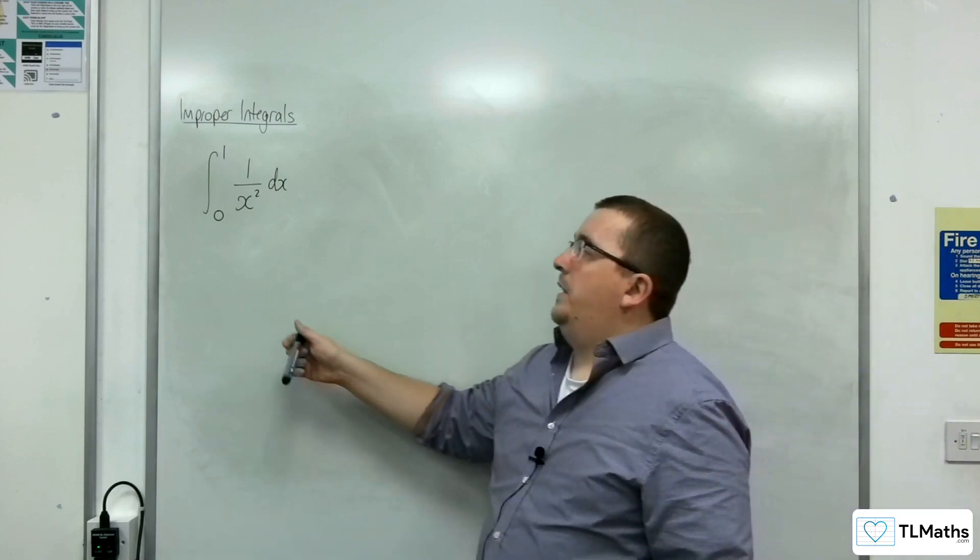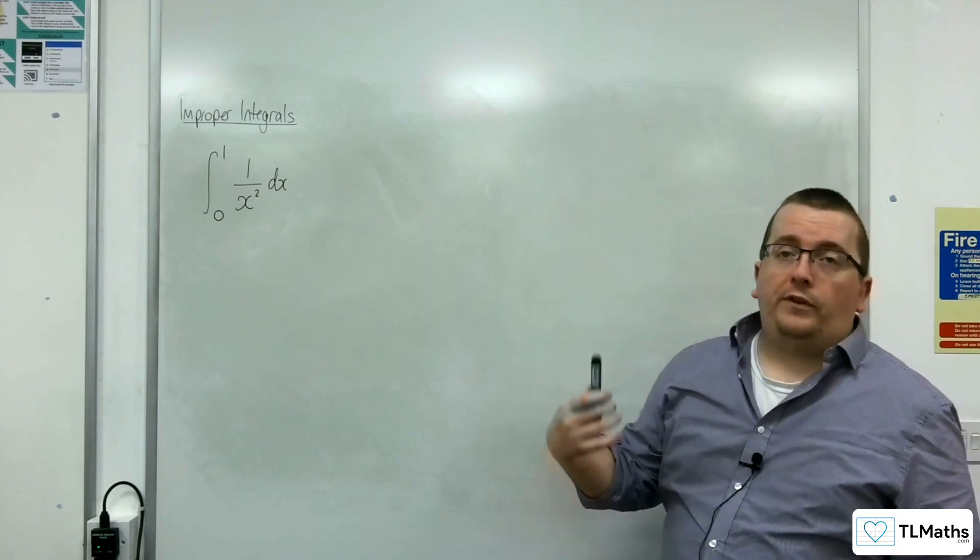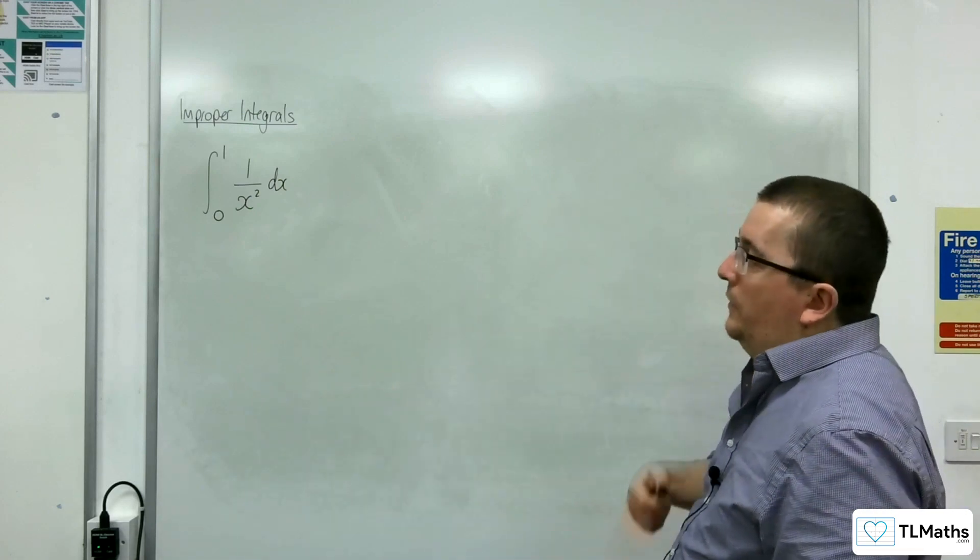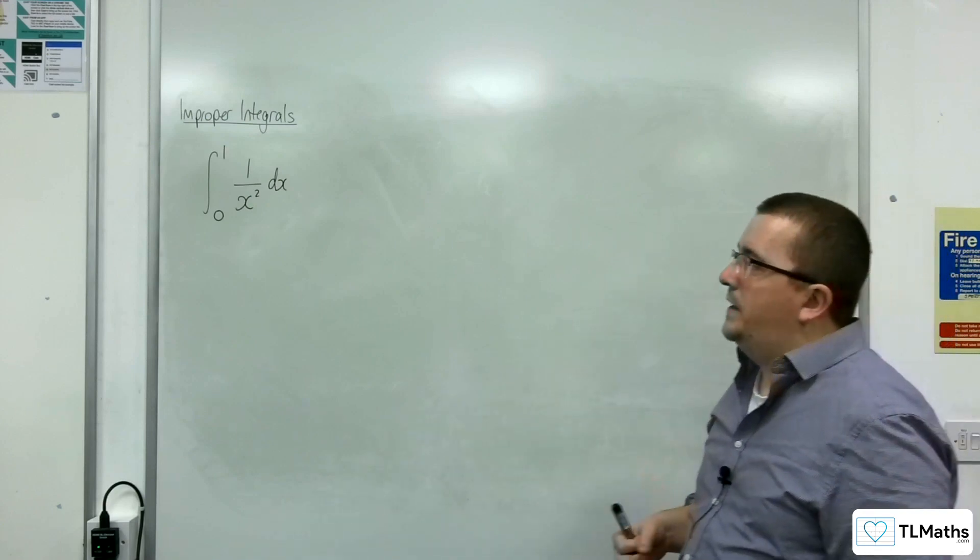We've actually got now a value, x being equal to 0, one of our limits, causing the function to have a bit of a problem, because there we're dividing by 0. So it's undefined there, so it is an improper integral by that definition.